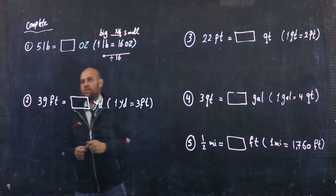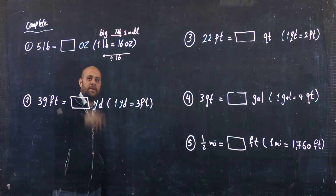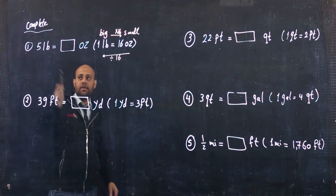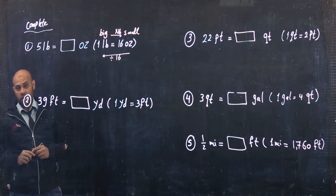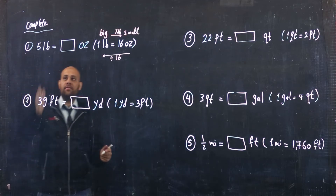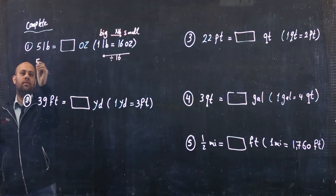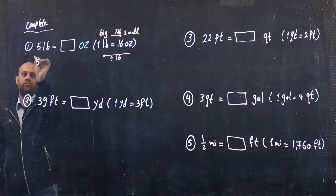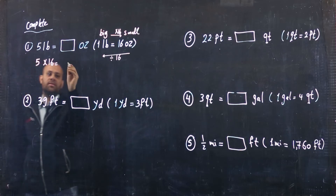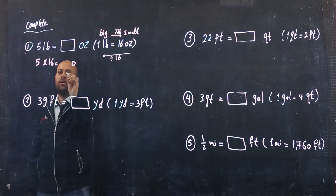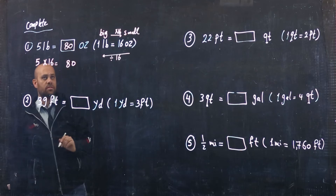Let's take the first exercise: 5 lb equals how many ounces? The relation between lb and ounces is: 1 lb equals 16 ounces. So it's big to small, so I want to multiply. I multiply 5 by 16, and the answer equals 80 ounces. It's very easy.